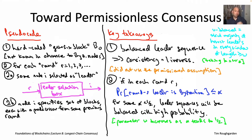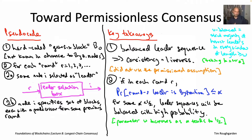You may recall we have a trusted setup assumption — A1 from lecture number eight — that nobody knows the genesis block up until the point that the protocol is actually deployed. We assume Byzantine nodes do not have advanced knowledge of genesis block B0. The rest of longest chain consensus operates in rounds: round number one, round number two, round number three, et cetera.